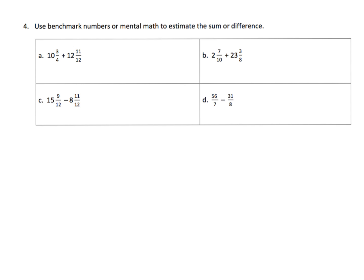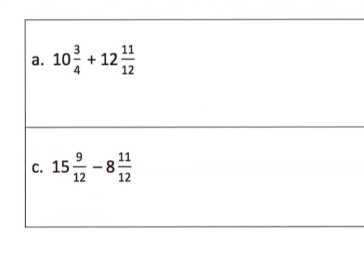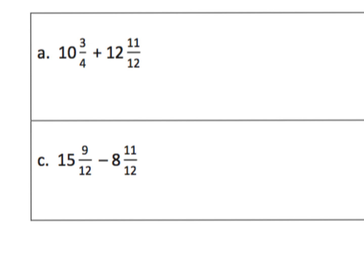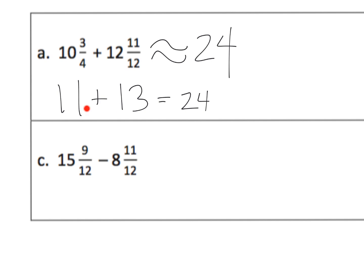This last slide gives students more practice of the same, more opportunity to think about benchmark numbers. For example, ten and three-quarters is about 11; twelve and eleven-twelfths is about 13. So that equals 24, and our estimation is 24. Notice that the rounding steps use the approximation symbol, but 11 plus 13 is equal to 24, so we use the equals sign there. That's how we distinguish the two symbols — this question is approximately 24.